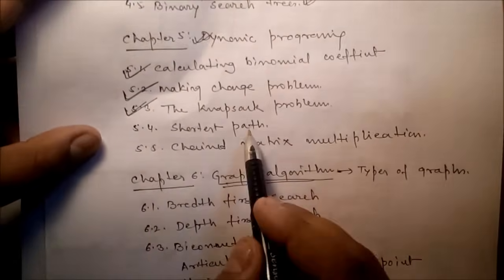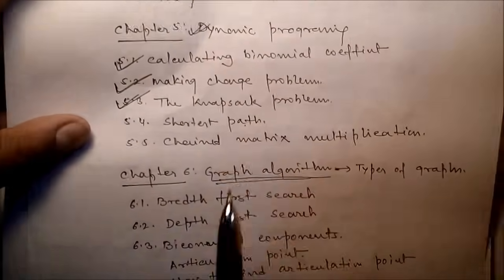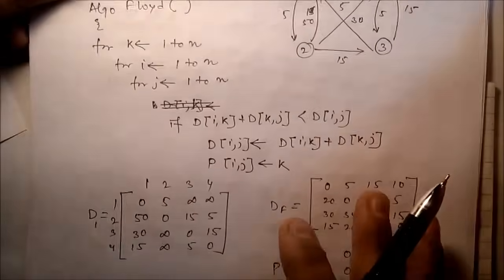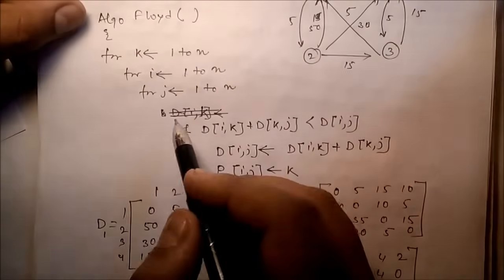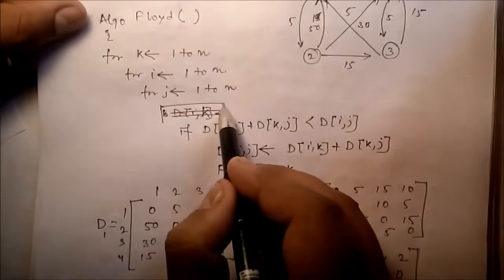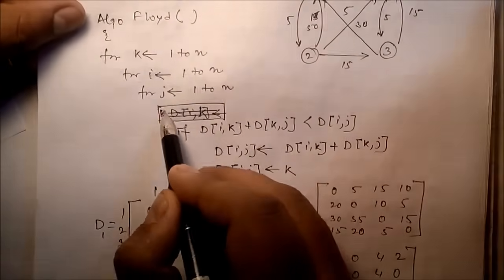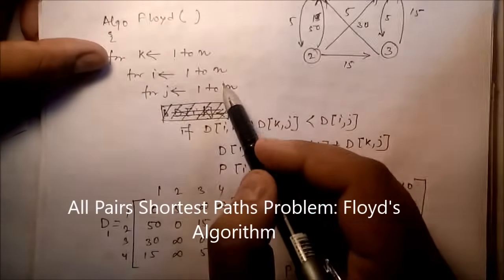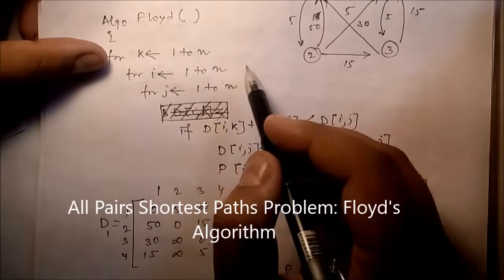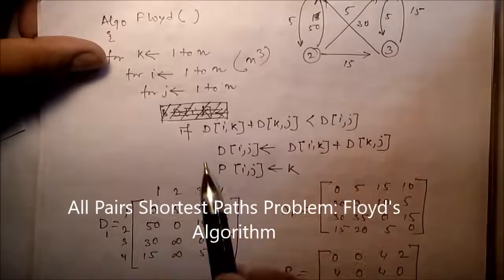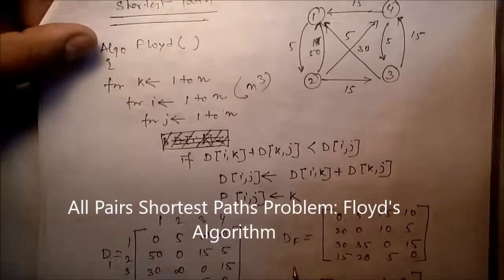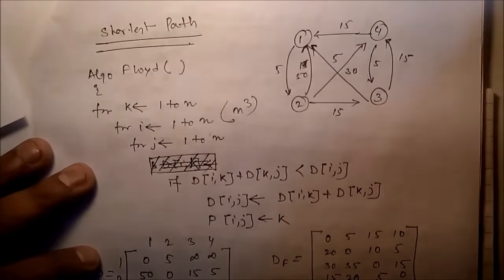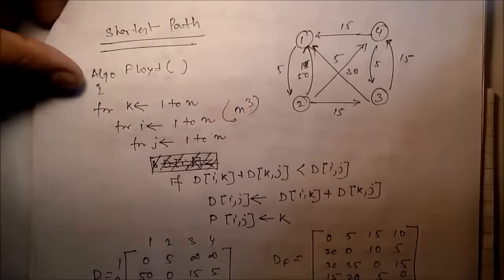Now we'll see the shortest path problem. In this problem we use the Floyd-Warshall algorithm — it is a very time-complex algorithm because there are three nested for loops, so the complexity is O(n³). We can call it the all-pairs shortest path problem, and we can use this particular algorithm for that.